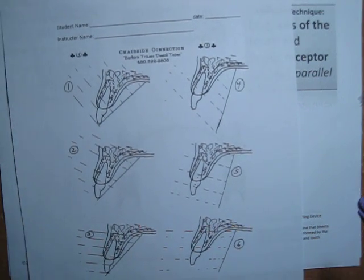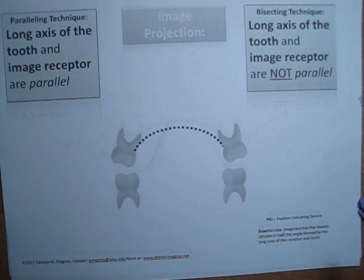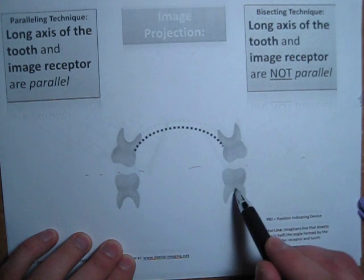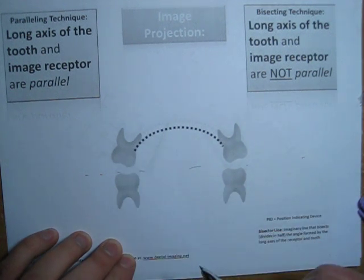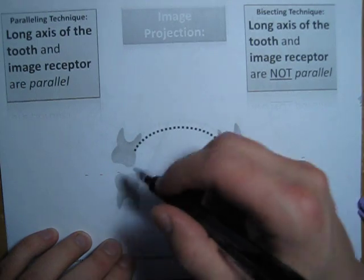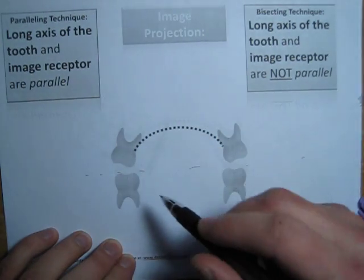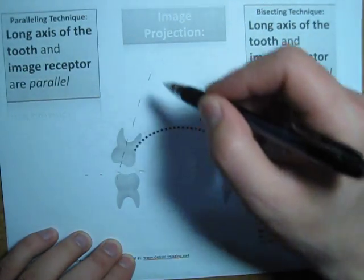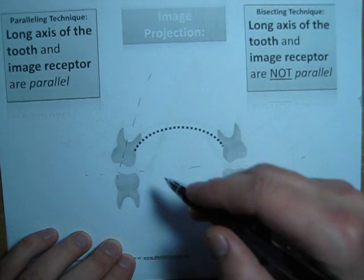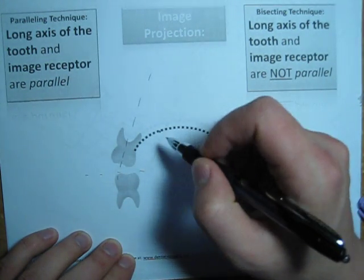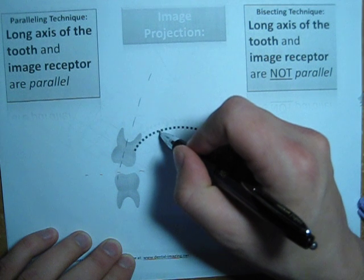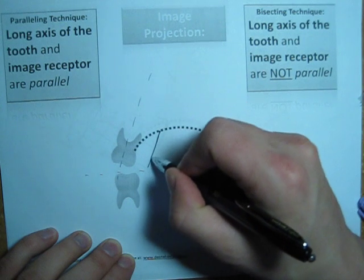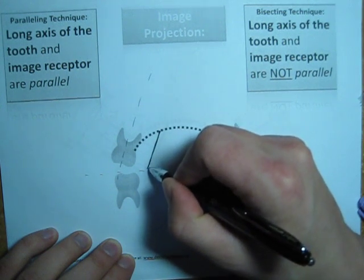So to start off with, let's look at this image here. Imagine these are the upper teeth, this is the occlusal plane, lower teeth, and we're working on the upper molars. What you should think of is the paralleling technique - the long axis of the tooth this way should be parallel with the image receptor, which could be a film, a phosphor plate, or a wired or wireless sensor. Let's draw the image receptor here, let's call it a film for conventional reasons.